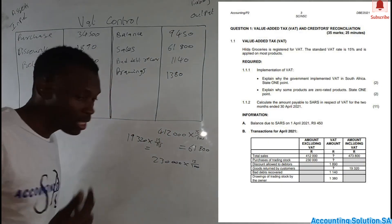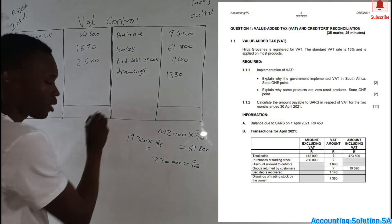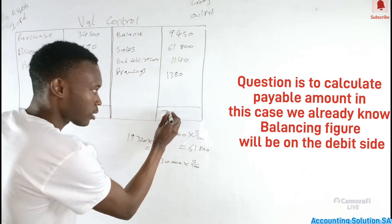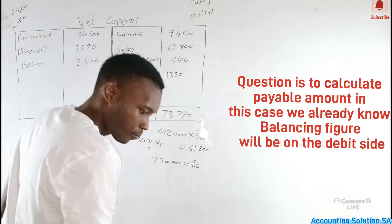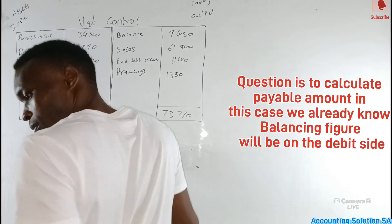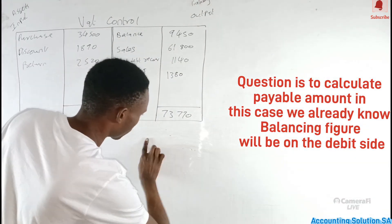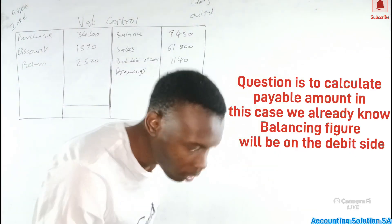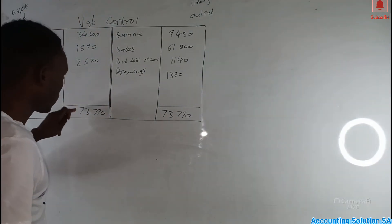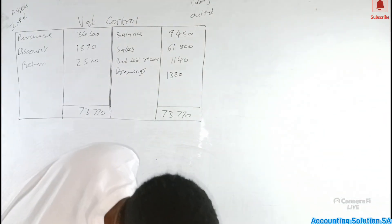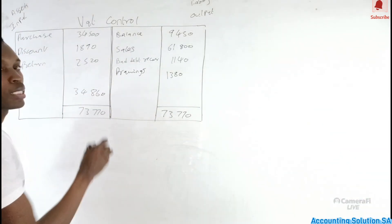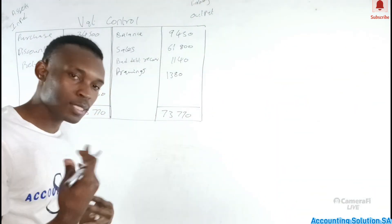After recording all transactions, we check which side is higher. According to my calculations, the output (credit) side is higher at R73,770. The input (debit) side must also total R73,770 after the balancing figure. When we subtract all input items from R73,770 — subtracting R25,200, R1,890, and R34,500 — it gives us a balance of R34,860.